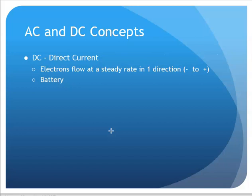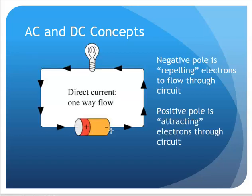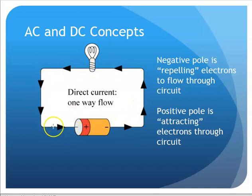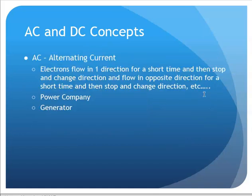With DC — direct current — electrons flow at a steady rate in one direction, typically negative to positive. A battery has a negative pole that pushes electrons away, and the positive pole attracts those negative electrons in, giving you direct current flow — that's your battery power. Meanwhile, with alternating current, electrons flow in one direction for a short time, stop, turn around, and move the other way — they alternate back and forth.